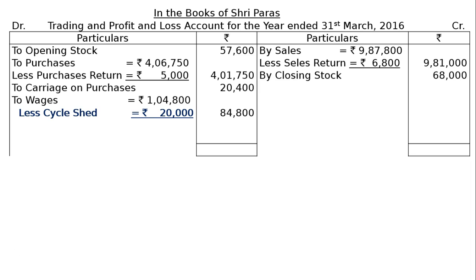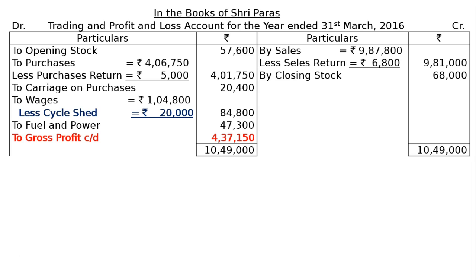The next one is to fuel and power, that is Rs. 47,300. The total of the credit side is Rs. 10,49,000. Write down on the debit side and find out the difference — the gap. To gross profit carried down Rs. 4,37,150.